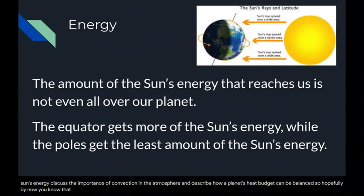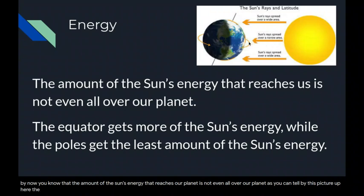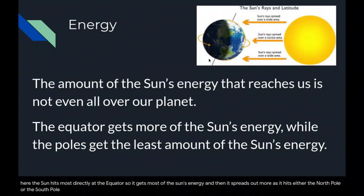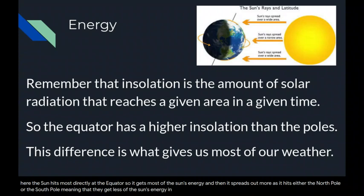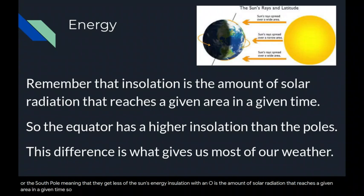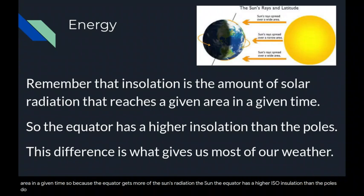The amount of the sun's energy that reaches our planet is not even all over our planet. As you can tell by this picture, the sun hits most directly at the equator, so it gets most of the sun's energy, and then it spreads out more as it hits either the North Pole or the South Pole, meaning they get less. Remember that insolation — with an O — is the amount of solar radiation that reaches a given area in a given time. Because the equator gets more of the sun's radiation, it has a higher insolation than the poles. That difference in solar radiation is what gives us most of our weather.